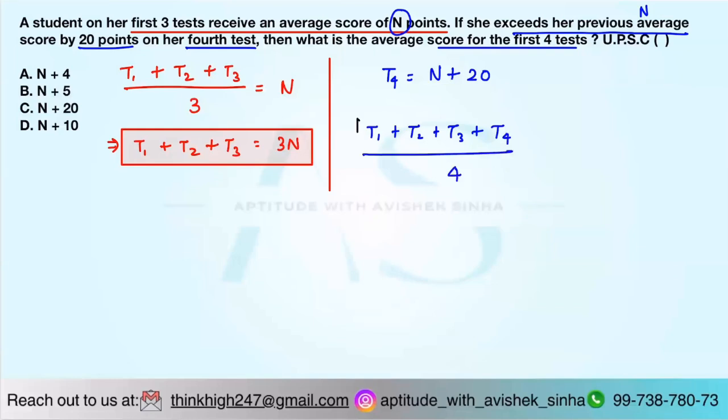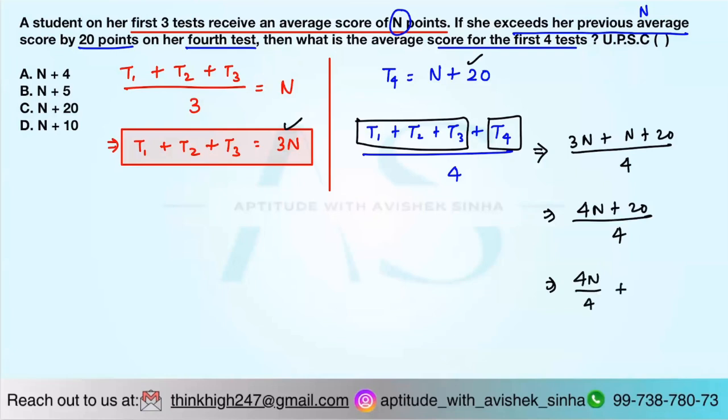We know T1, T2, T3 is 3n and T4 is n plus 20. So putting these two values, we get 3n plus n plus 20, which is 4n plus 20 by 4. That's 4n by 4 plus 20 by 4, which is n plus 5.